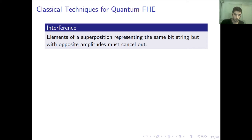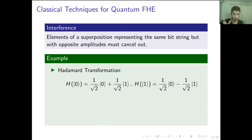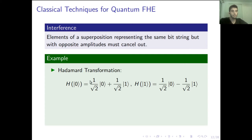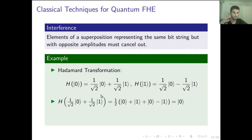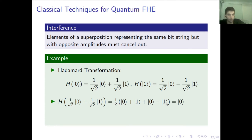To make this more evident, I'll use an example focusing on the Hadamard transformation. Here you can see the Hadamard transformation applied to ket-zero and ket-one. If we apply the Hadamard transformation onto a superposition and substitute Hadamard of ket-zero and Hadamard of ket-one, we get this result. We have ket-one and minus ket-one — qubits with the same bit string but opposite amplitude — so they cancel out, and the result is ket-zero. This interference is really important for quantum computations.